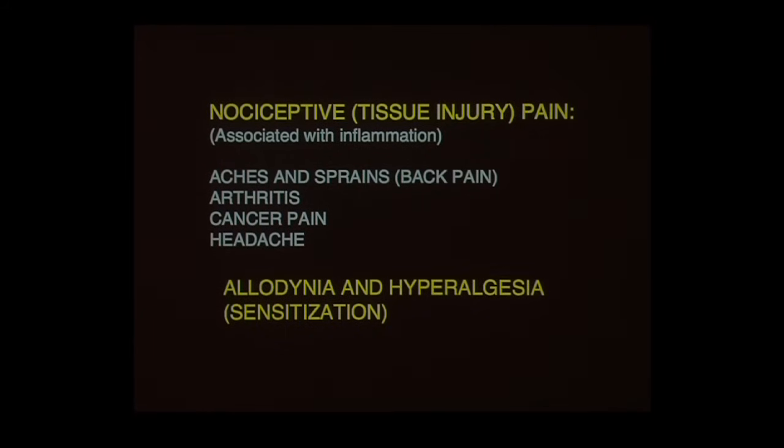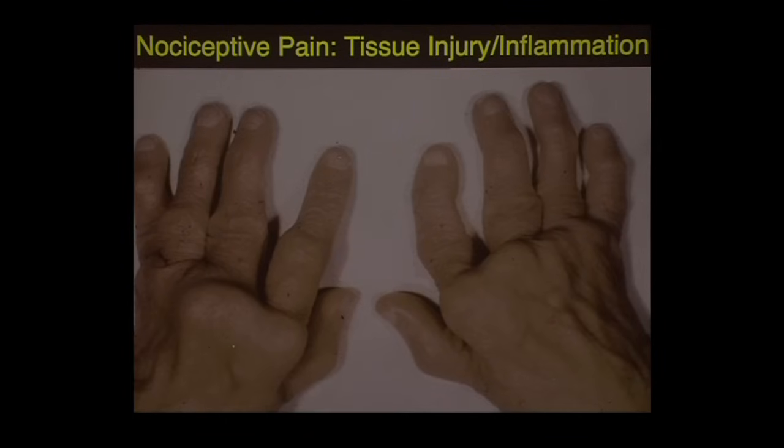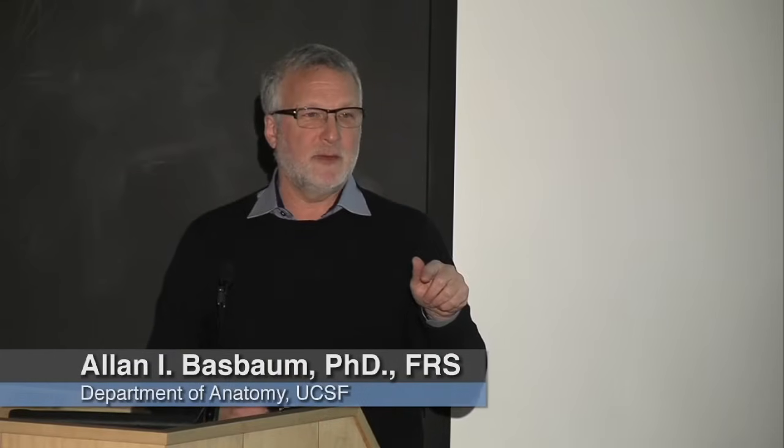What's interesting about nociceptive pain is that the big problem is that innocuous stimuli hurt — it hurts to move. That's abnormal. We call it allodynia: pain provoked by stimuli that are normally not painful. This is a terrible example of an individual with a severe arthritic condition. The joints are distorted, but they'll tell you the biggest problem is not that the joints are distorted — it's that it hurts to move their fingers. They can't tie their shoelaces. That's what ruins people's lives: normal daily activities are now painful.